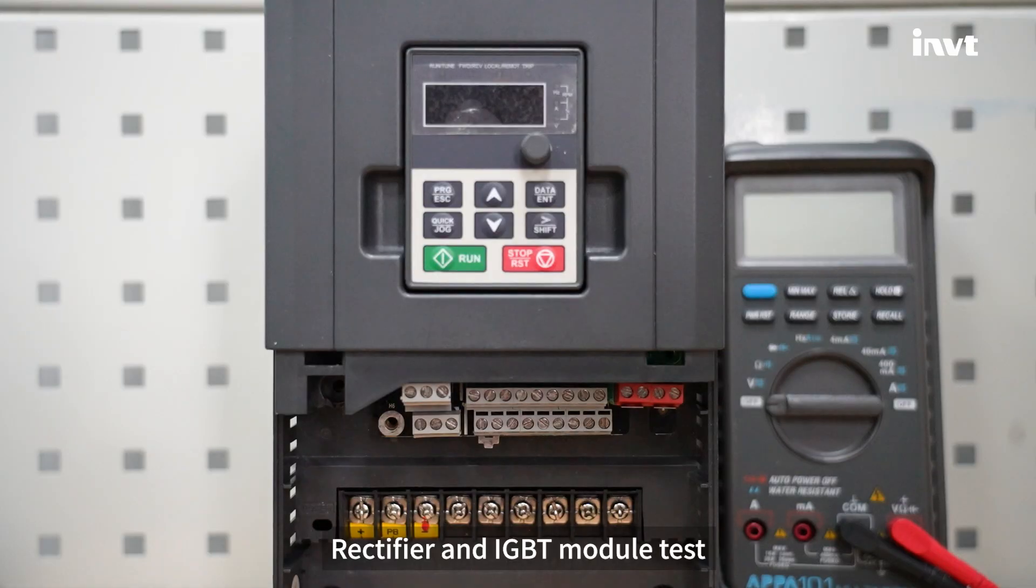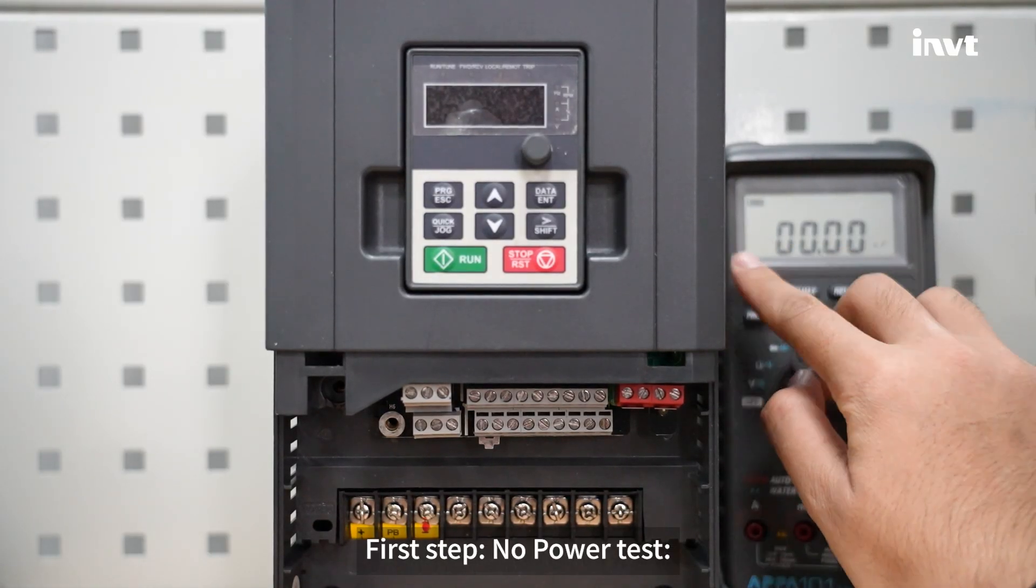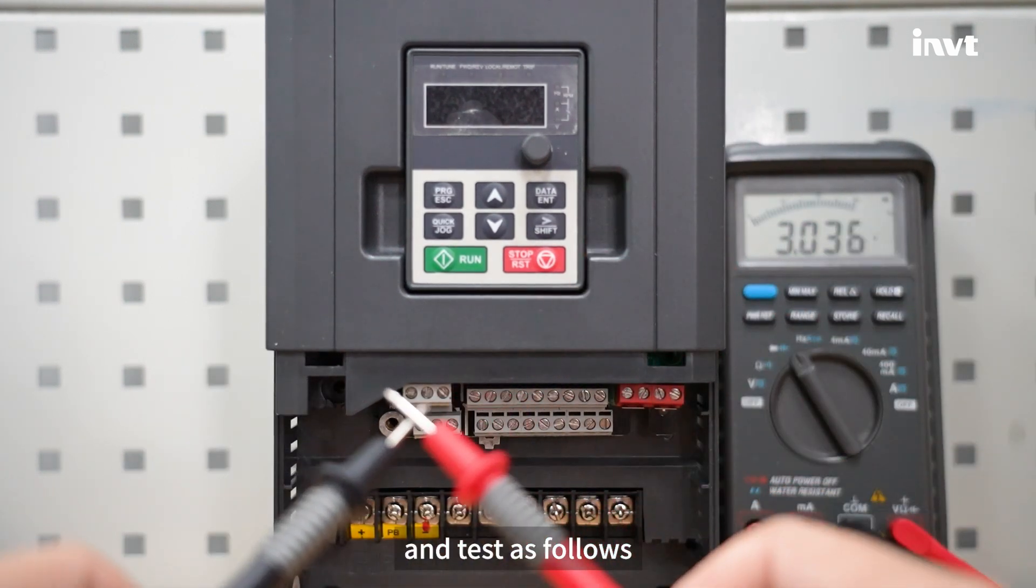Rectifier and IGBT module test. First step, no power test. Second, switch the multimeter to diode position and test as follows.